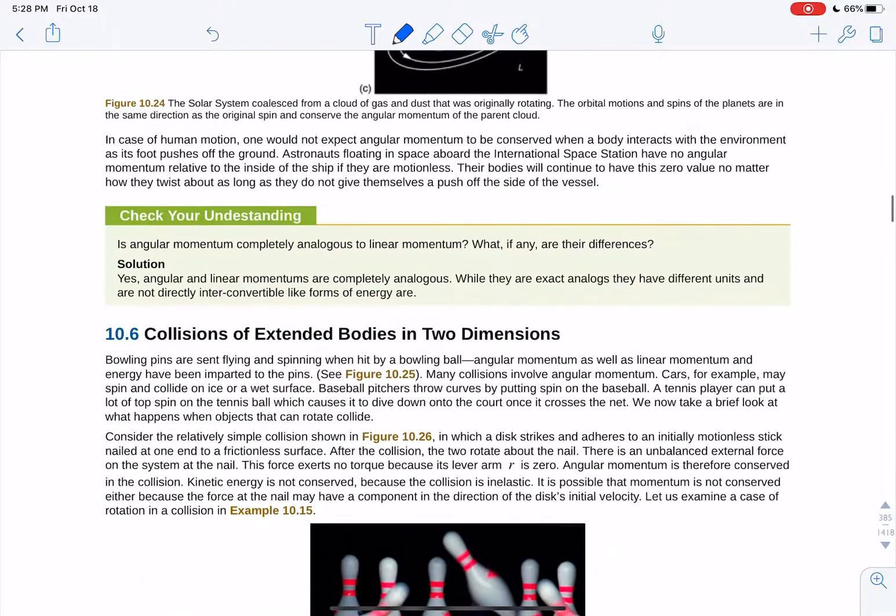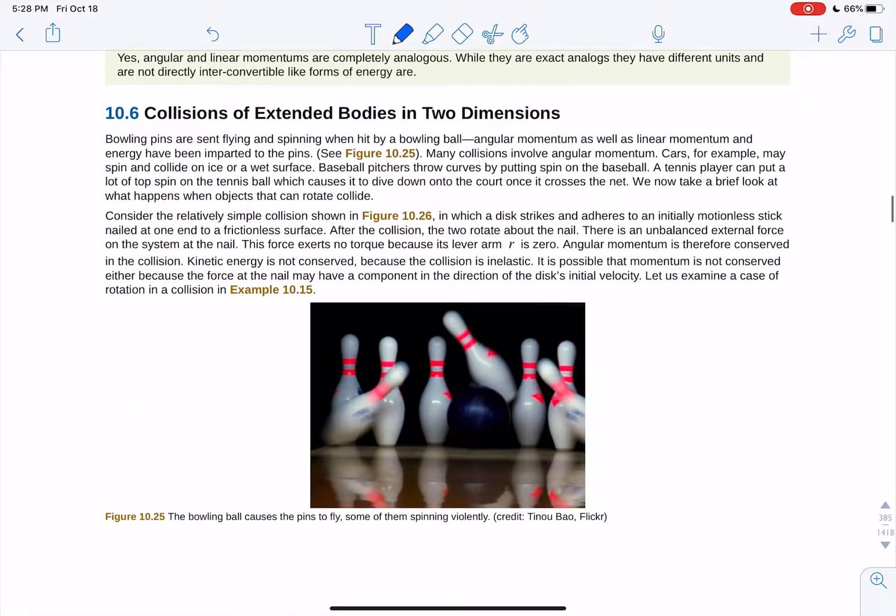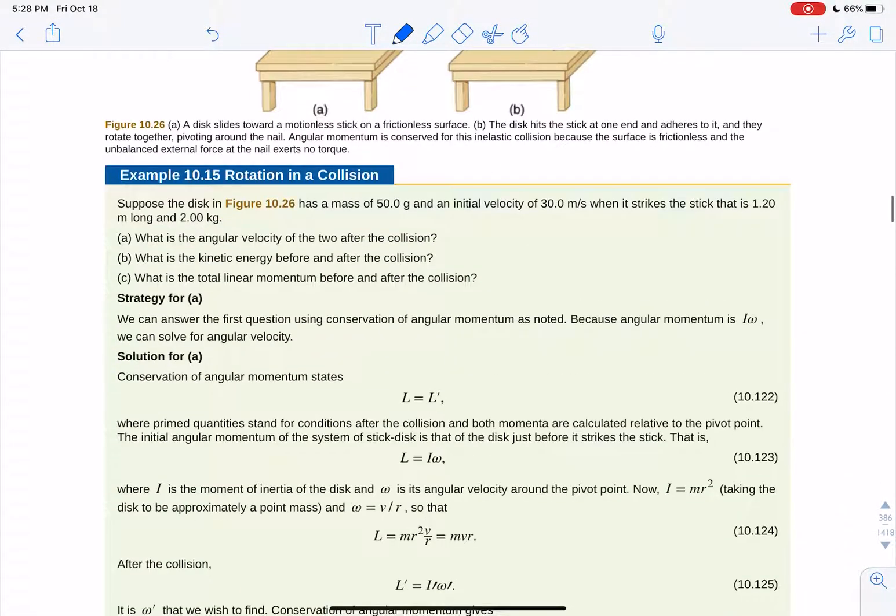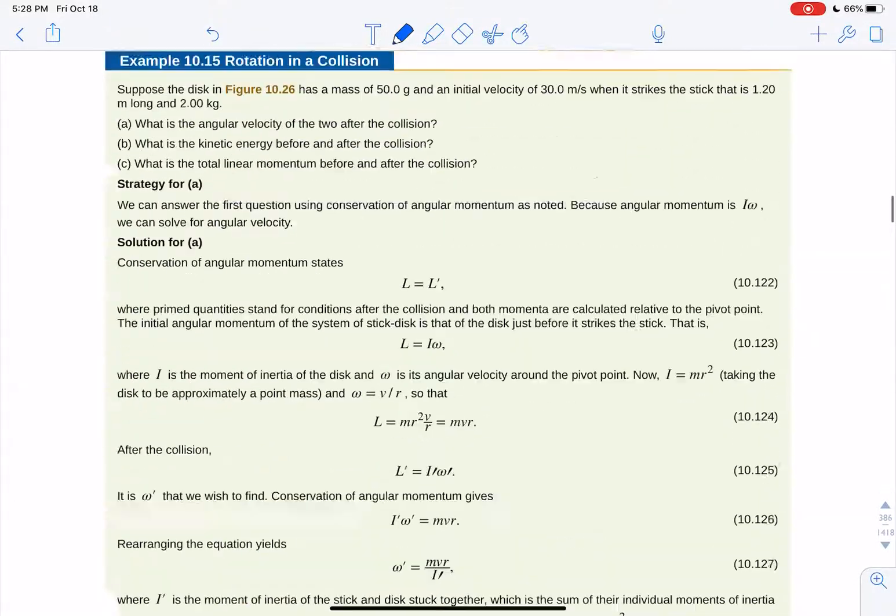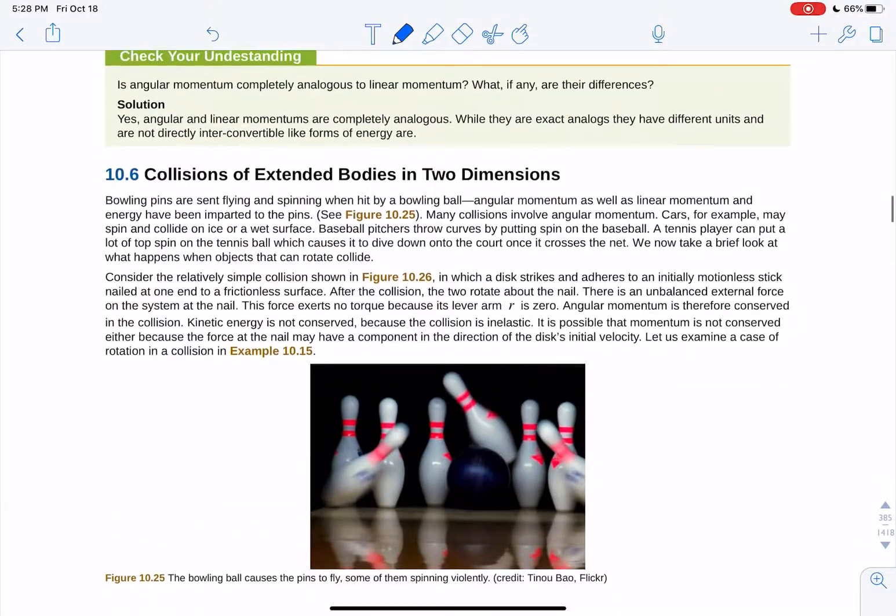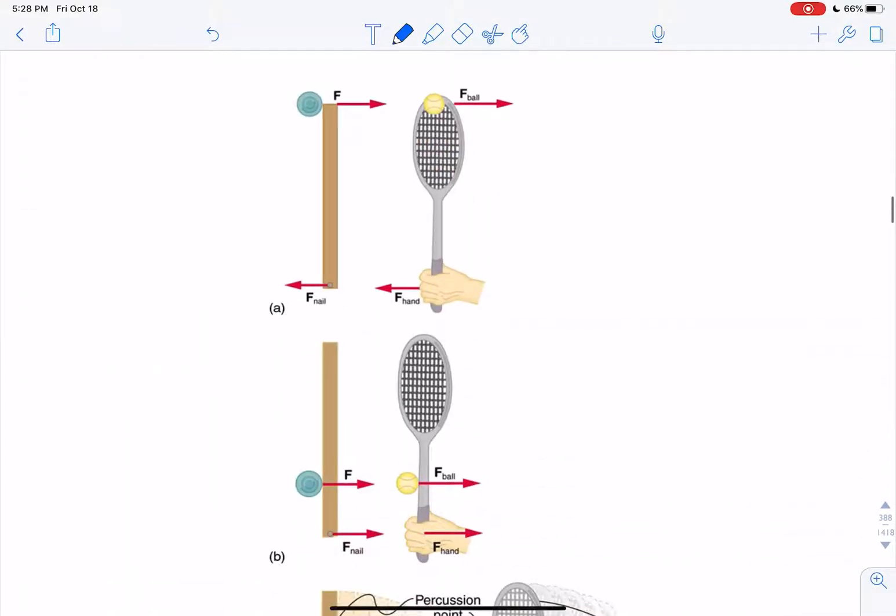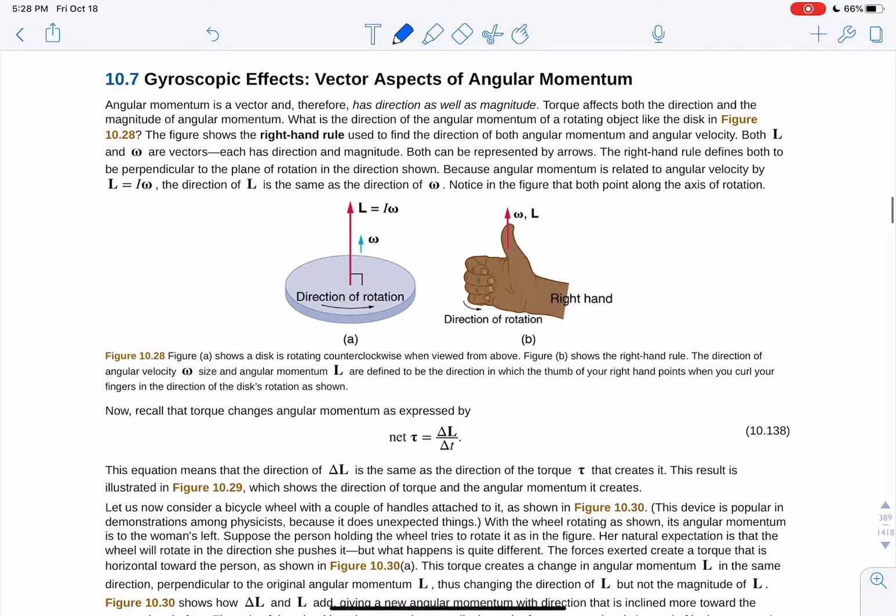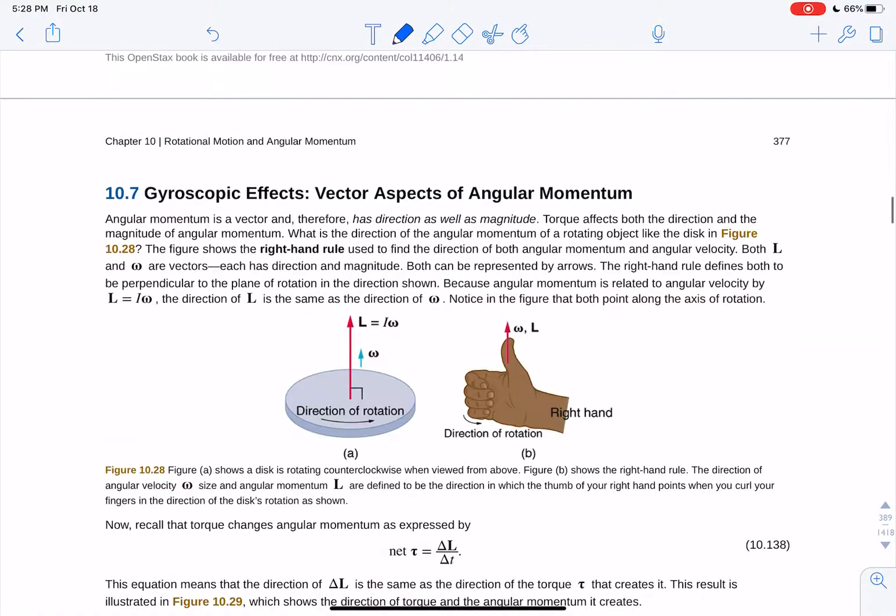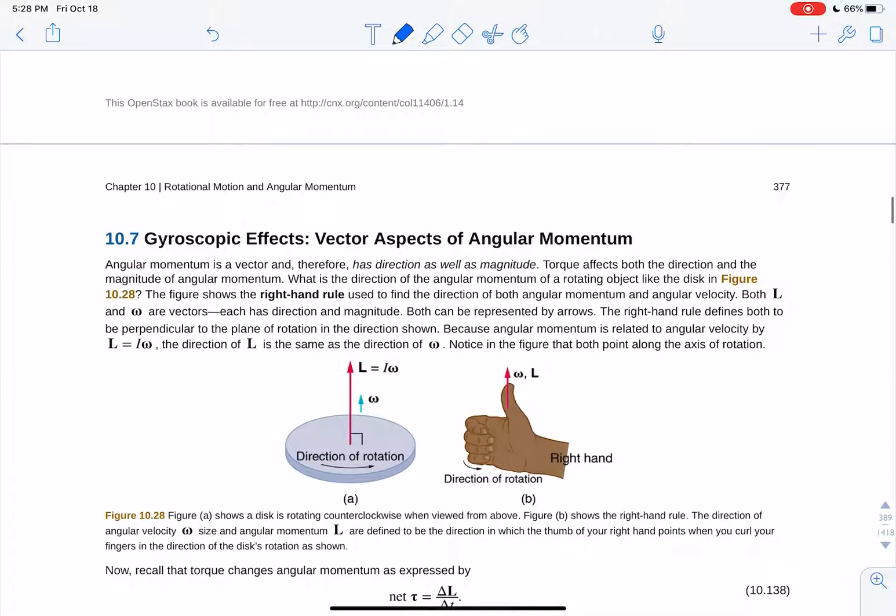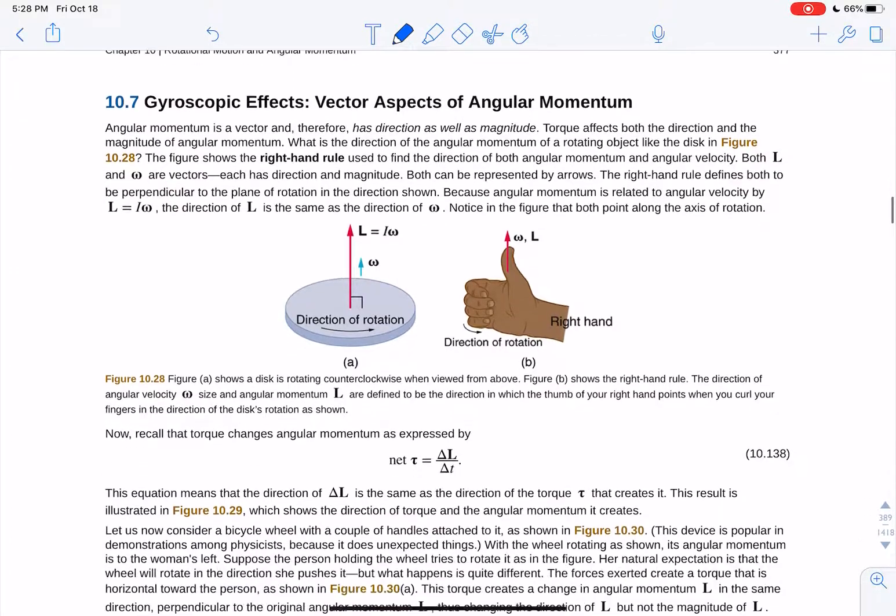And then we got some planets there. And then two body collisions - we're not going to spend a whole lot of time on collisions of extended bodies in two dimensions. We're not going to spend a whole lot of time on that, but it's the same as the other thing where you just focus on your initial and final components of x and y.